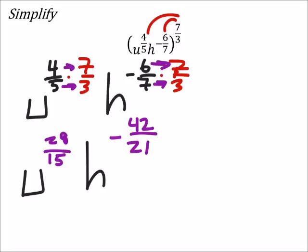And 28 fifteenths. Doesn't look like it can be simplified any further. But we can simplify this negative 42 twenty-oneths by dividing both these by 21. 42 divided by 21 is just 2.